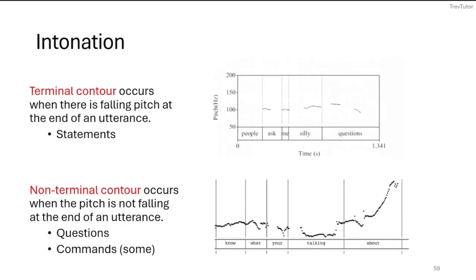Here's some examples of intonation, and we have two different types of contour that we talk about. One is terminal contour, and one is non-terminal contour. And you can see these in the diagrams to the right. So terminal contour is when the pitch goes down at the end of a sentence. So in English, we do this when we ask, or when we just say regular statements. So people ask me silly questions. You can see it go down at the end.